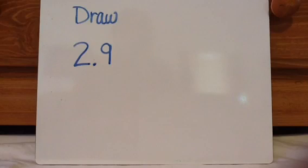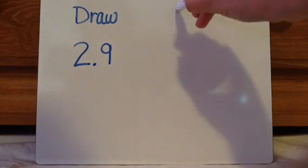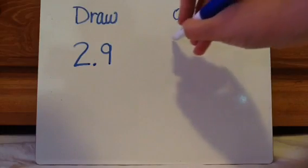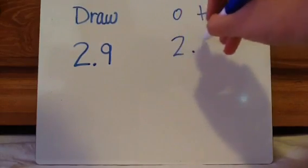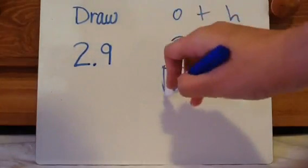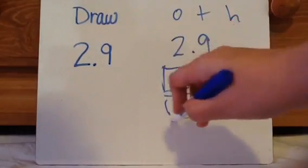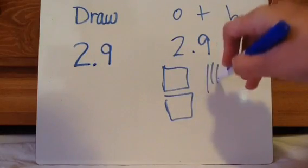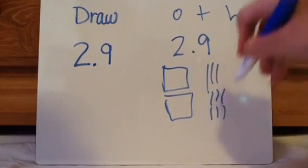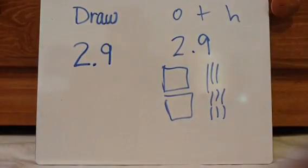Last one — press pause, draw, and press play when you're ready to check. So if you notice, nothing in the hundredths place, so there's going to be 2 ones and 9 tenths, but I'm not going to draw any hundredths.